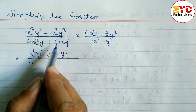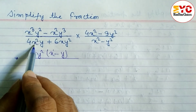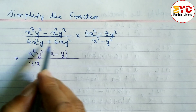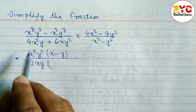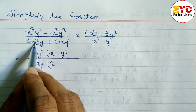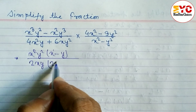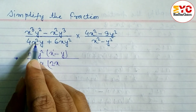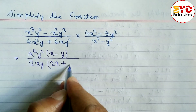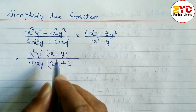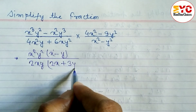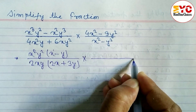Now in the denominator you can see 4 and 6 — common factor from the numbers is 2, because 2 times 2 is 4 and 2 times 3 is 6. From x square and x, lowest power x is common. From y and y square, y is common. So remaining: 2 times 2 is 4, x times x gives x square, then plus 2 times 3 is 6, x is common, y square gives y remaining.